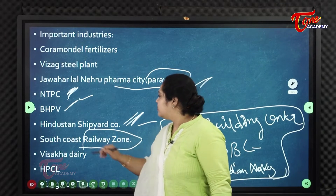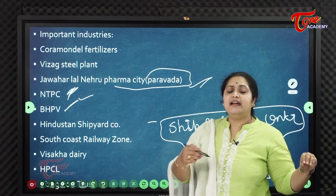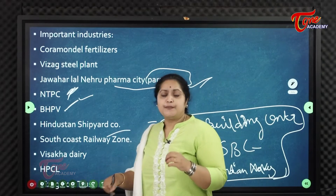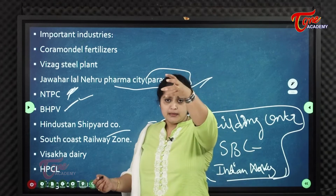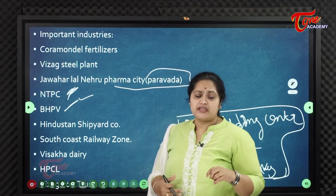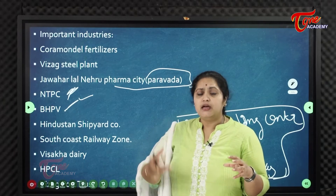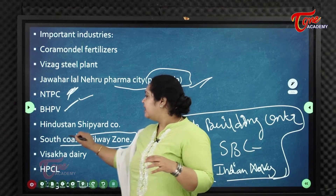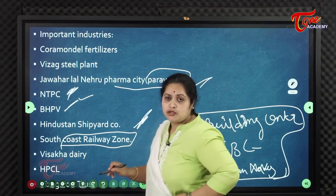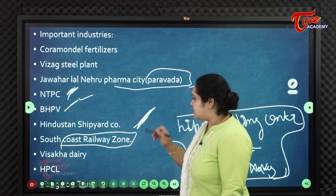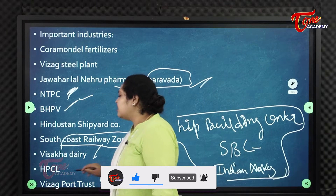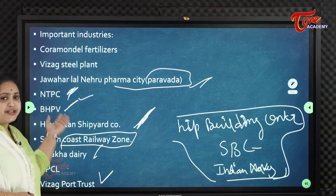The South Coast Railway Zone is a new railway zone headquartered in Visakhapatnam. Earlier it was under Southeastern Railway (headquartered in Garden Ridge, Kolkata) and then East Coast Railway (headquartered in Bhubaneswar). Other major industries include Vishaka Dairy, HPCL, and Vizag Port Trust.